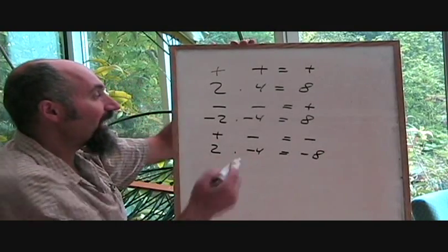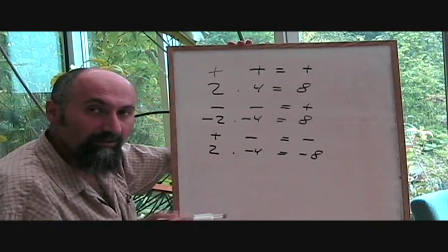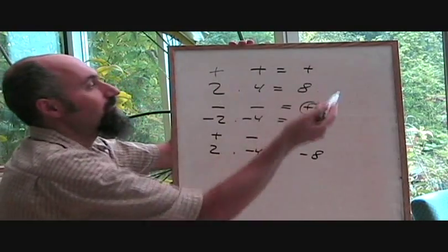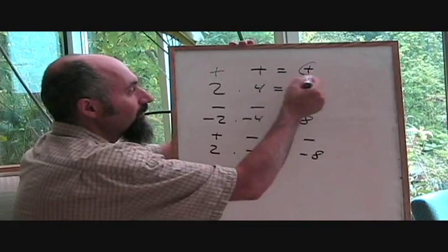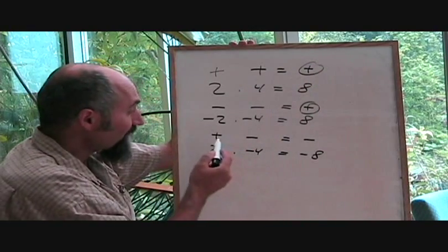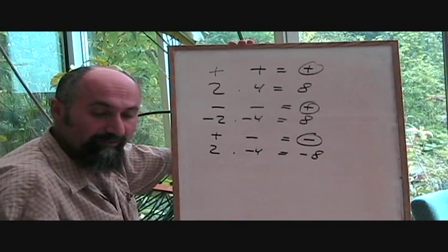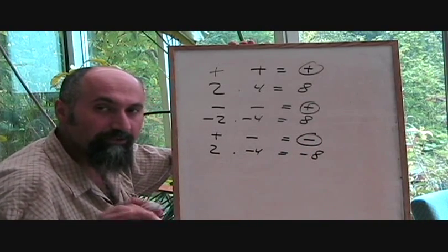So the way it works is if you have an even number of negatives multiplied or divided together, they're going to give you positive. If you've got all the numbers positive, it's still going to be positive. If you've got an odd number of negatives multiplied together, the answer is going to be negative.